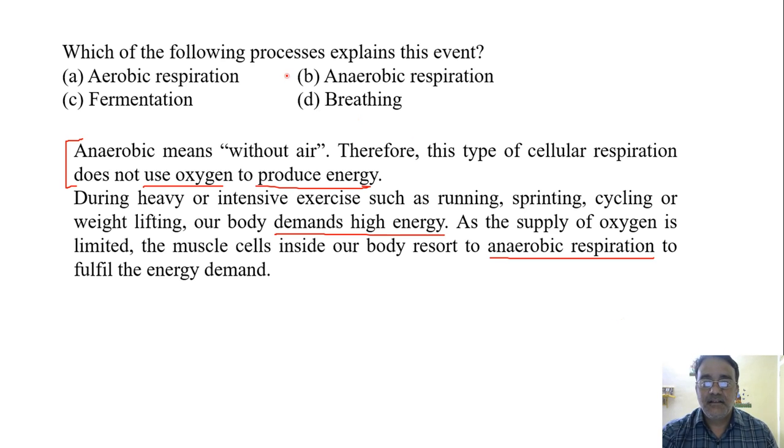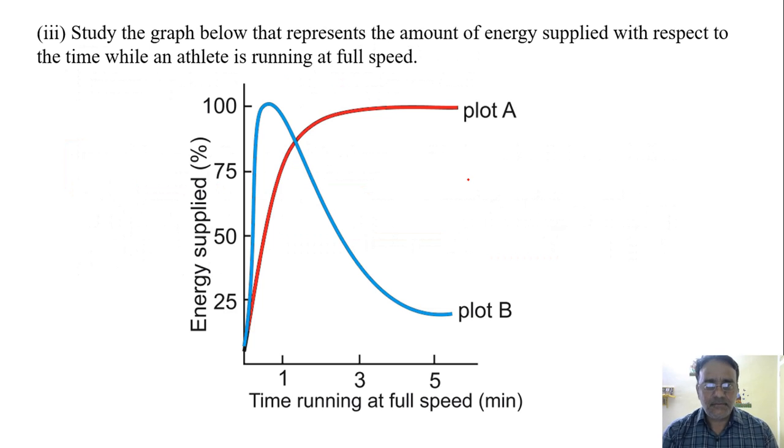Now we will move towards the next question. Study the graph below that represents the amount of energy supplied with respect to time while an athlete is running at full speed. The red color shows that the energy level is consistent.